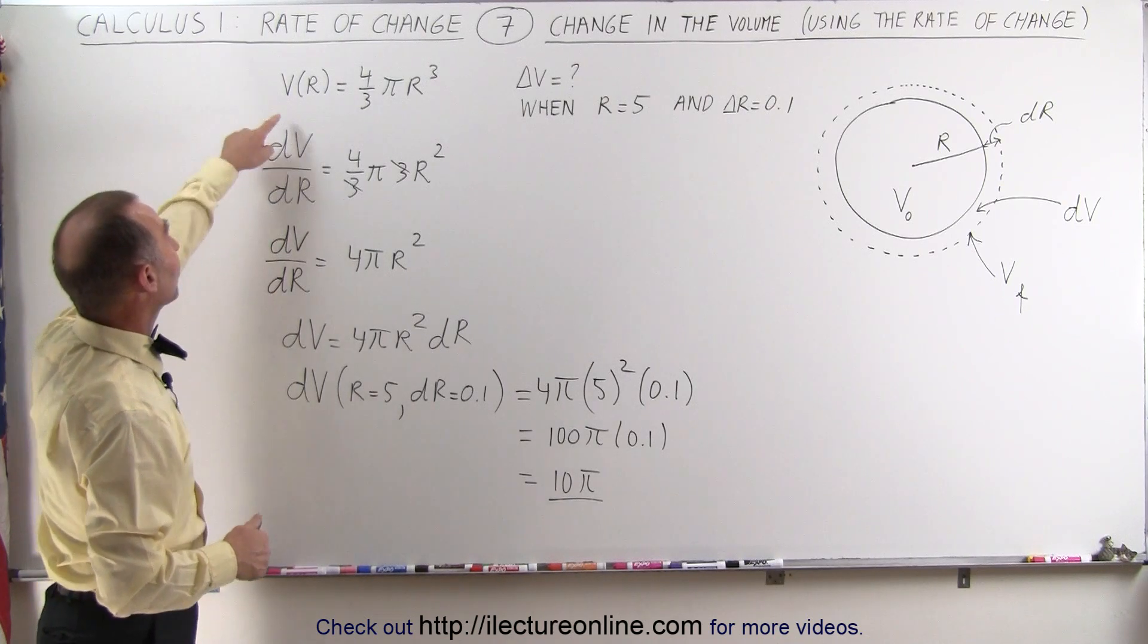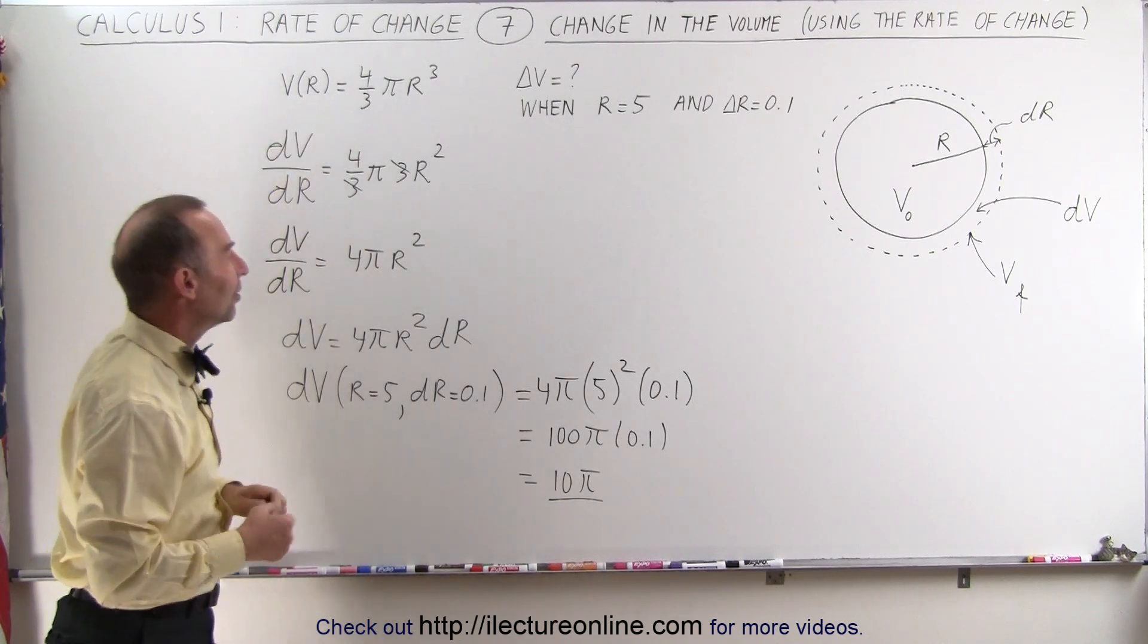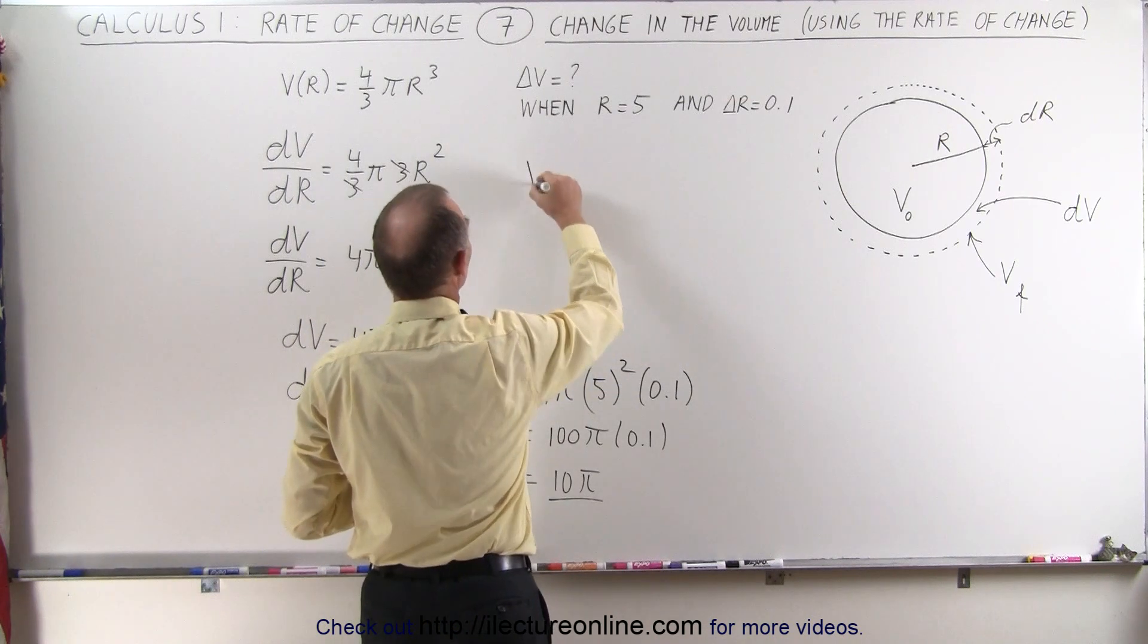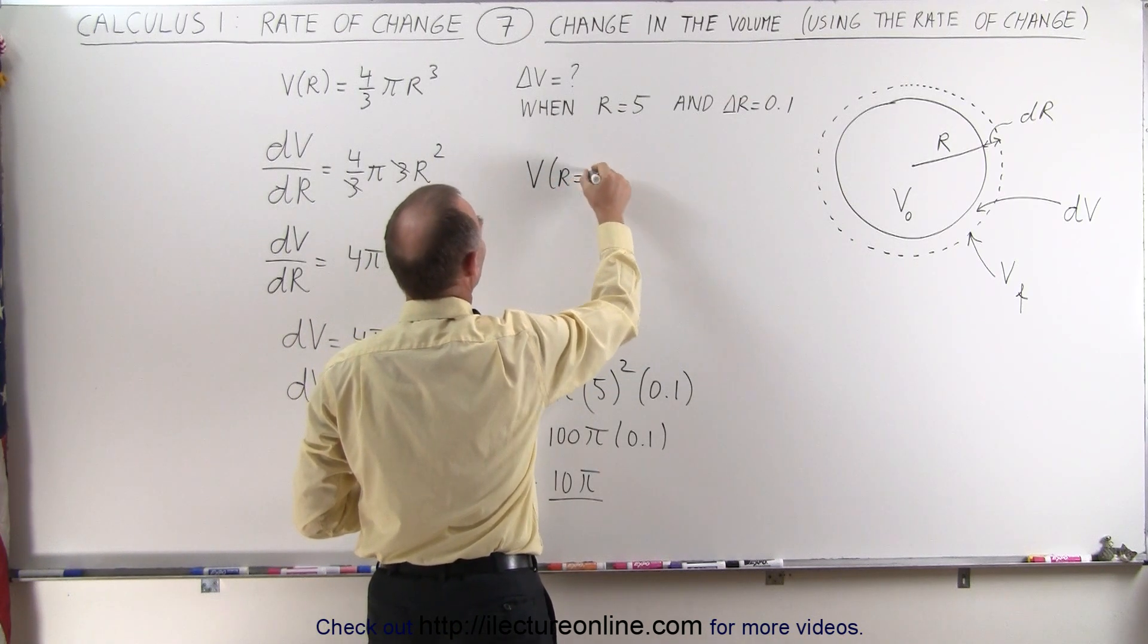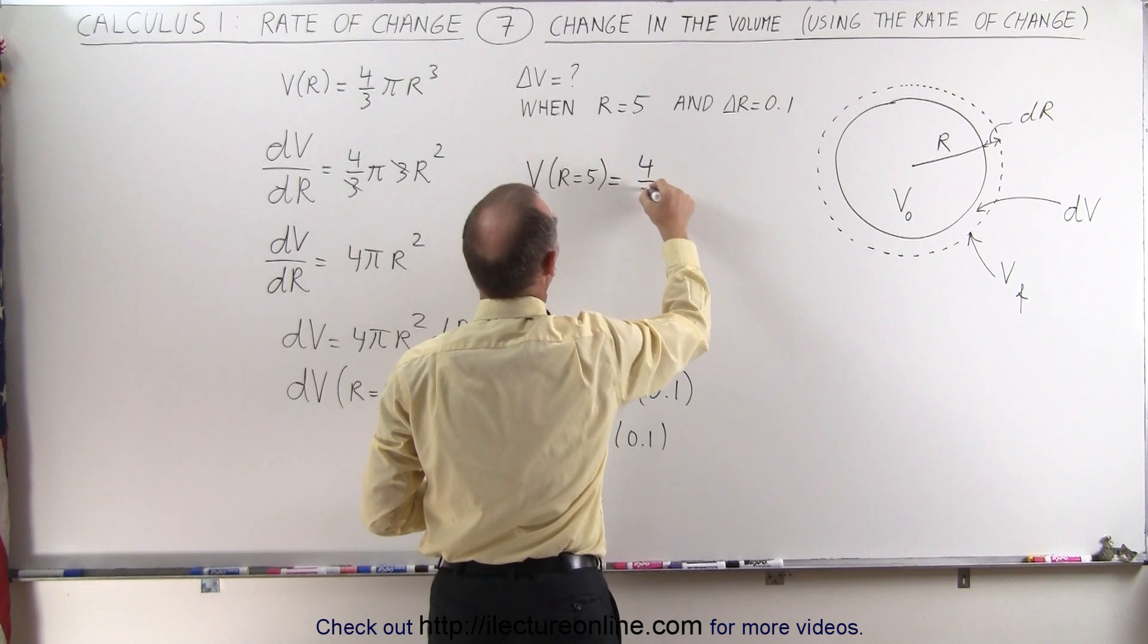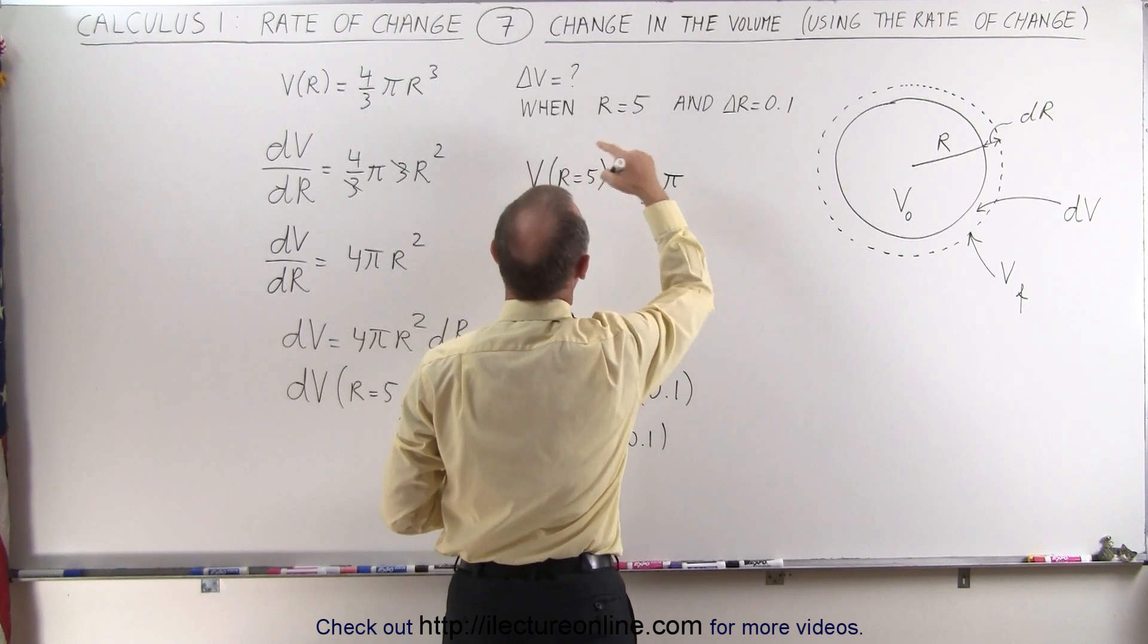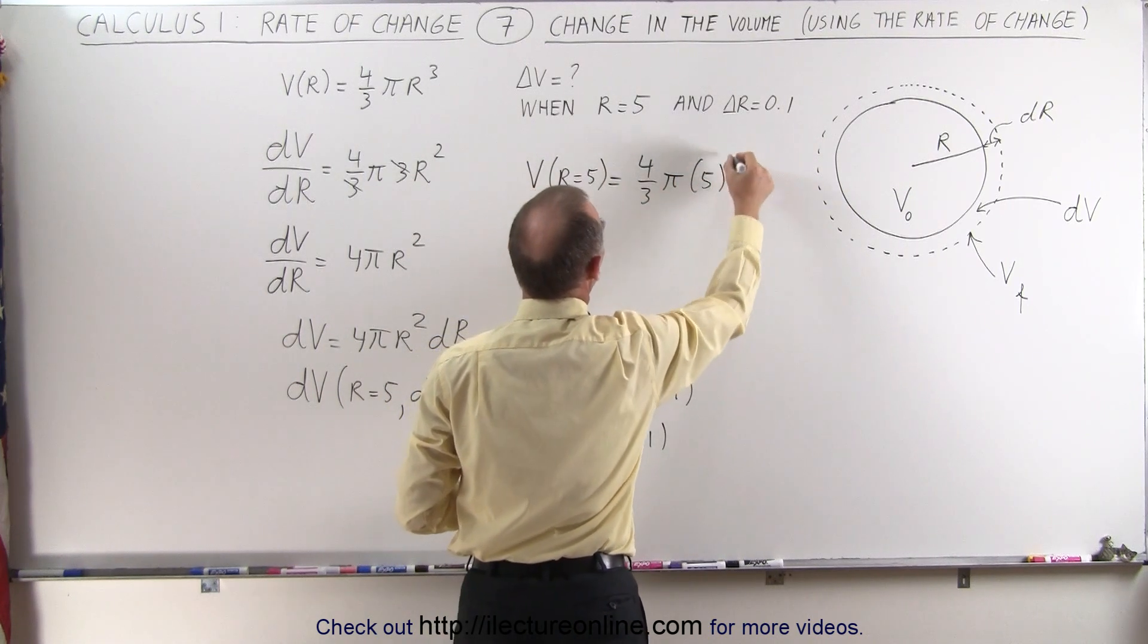Let's go ahead and figure out what the volume would be when r is indeed 5. So the volume when r is equal to 5 is equal to 4 thirds pi, and that would be the quantity 5 cubed.